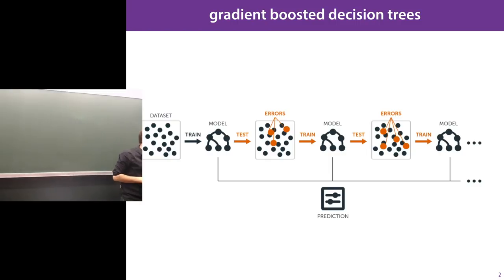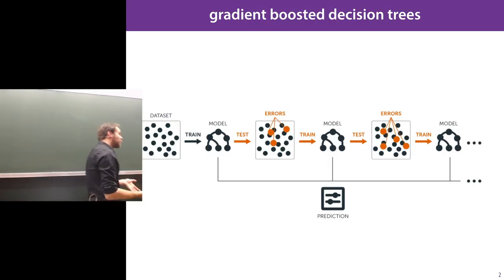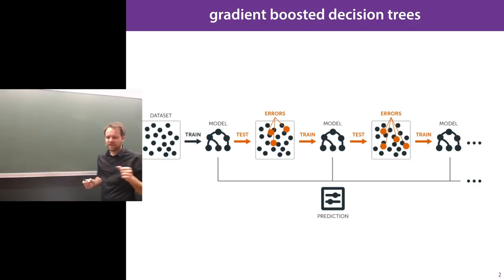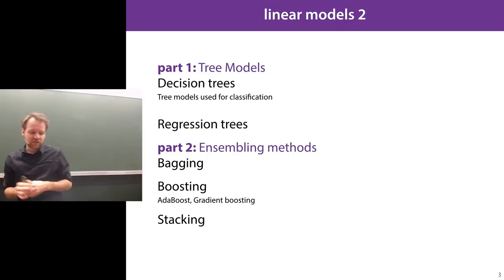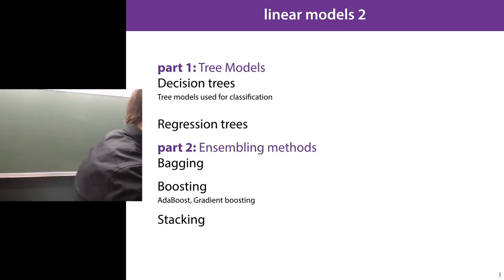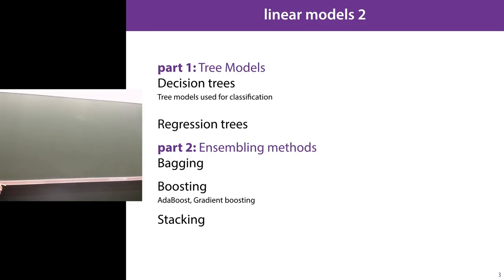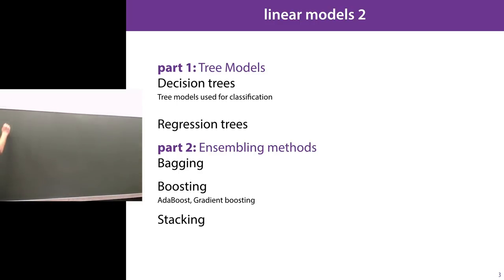In machine learning research, this method is pretty much worked out and there's not a lot more to say about it. But in production and in things like Kaggle competitions, it's a very popular approach. It combines the basic idea of a decision tree learner, which we'll cover in the first half, and the idea of training lots of models and combining them — called ensembling — which we'll cover in the second half.